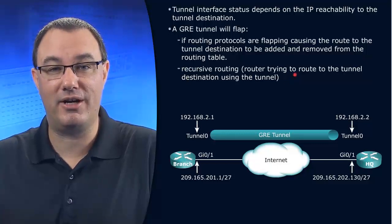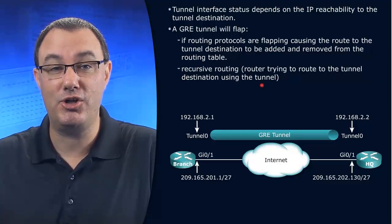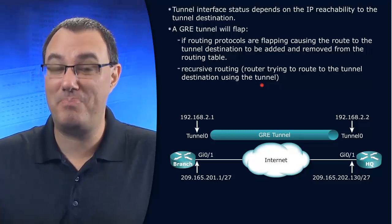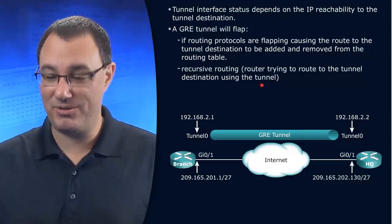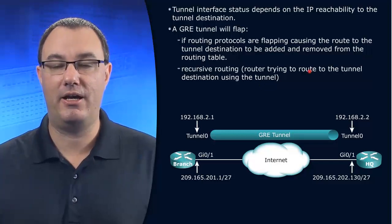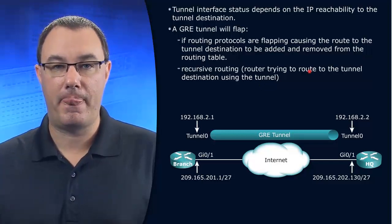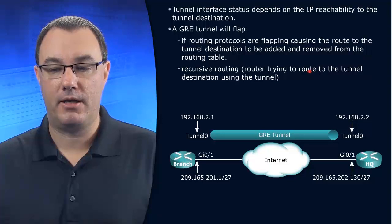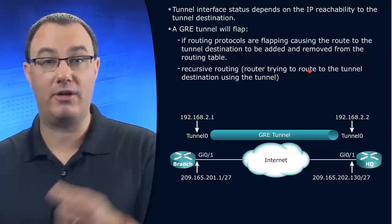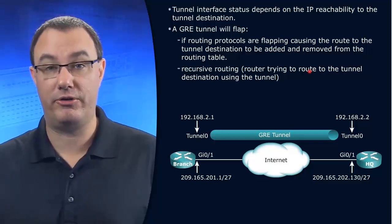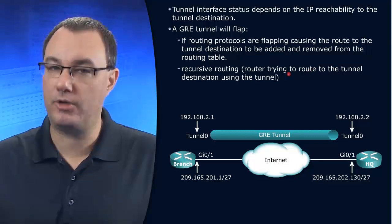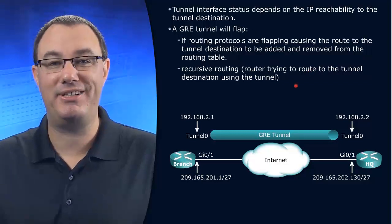So recursive routing — the router is trying to route to the tunnel destination using the tunnel itself. Bear that in mind. For instance, let's say you had tunnel zero, and you add an IP route to the destination IP address using tunnel zero — that would be bad. So take heed of these two possible causes of GRE flapping.